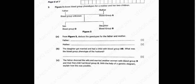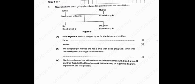So we go to question 5. Figure 5 shows blood group phenotypes for a mother and her two children, and we're being given a diagram for the father, the mother, the son, and the daughter. Question 5a says: from figure 5, deduce the genotypes for the father and mother.